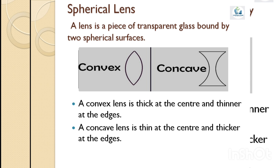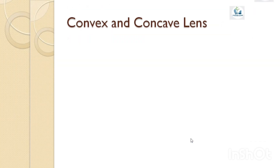A lens is a piece of transparent glass bound by two spherical surfaces. In this chapter we will discuss mainly about two types of lenses: convex lens and concave lens. As you can see in the diagram, a convex lens is thick at the center but thinner at the edges, whereas a concave lens is thin at the center and thicker at the edges.